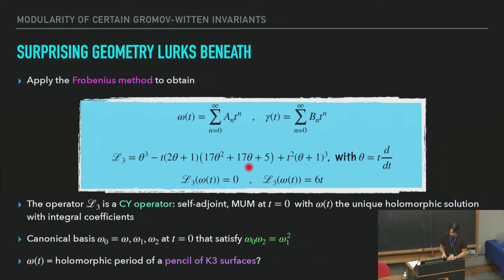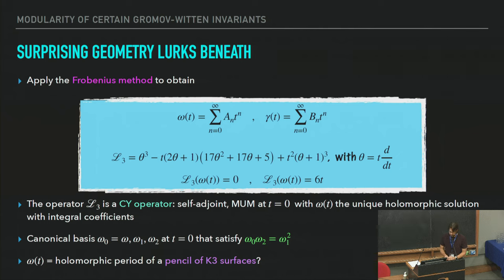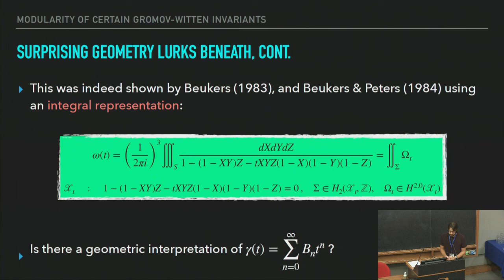The genesis of the geometry is that this operator is a Calabi-Yau operator — specifically the Picard-Fuchs operator. Analyzing it, we see it is self-adjoint, maximally unipotent at t=0, and omega is the unique holomorphic solution at t=0 with the integrality properties expected of Calabi-Yaus. The maximal unipotency gives a canonical logarithmic basis of solutions near t=0, and self-adjointness means these solutions satisfy a quadratic relation. Since it's a third-order operator, omega should be the holomorphic period of a pencil of K3 surfaces, and indeed this was shown by Beukers and later by Beukers and Peters: omega is precisely the period integral of a K3 surface given by an affine equation in affine 3-space.